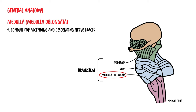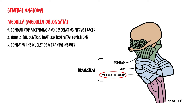The medulla has many important features and functions. It is a conduit for many essential ascending and descending nerve tracts. It houses centers that control vital functions of the body such as heart rate, breathing, and blood pressure, and also contains the nuclei of four cranial nerves.